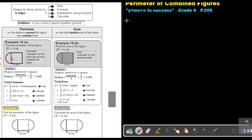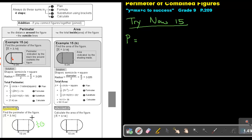It's Try now 15, and this is going to be 50. Now if I want to find the perimeter of the combined figure, I must first write down a plan. Now if you look, this is a half circle, and this is also a half circle. So a half plus a half will be one circle — the perimeter or circumference of one circle. Plus, it will just be two sides of the square.